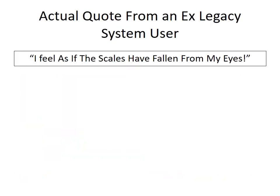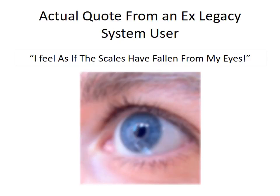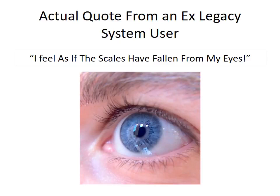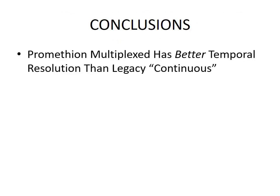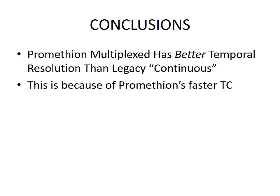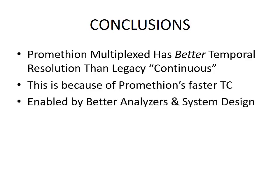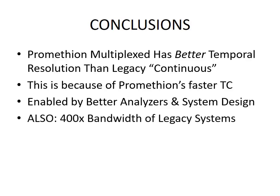Here's an actual quote from an ex-legacy system user at an Ivy League university: 'I feel as if the scales have fallen from my eyes.' Indeed, when you're used to looking at legacy metabolic phenotyping data and then you look at Prometheon metabolic phenotyping data, it is a whole different experience. Conclusions: the Prometheon multiplex system has definitely got better temporal resolution than legacy continuous systems, because of Prometheon's much faster time constant, which in turn is enabled by better analyzers and better system design. We have 400 times the bandwidth of legacy systems — 400 times more information being stored per second from a Prometheon system than from a typical legacy system.